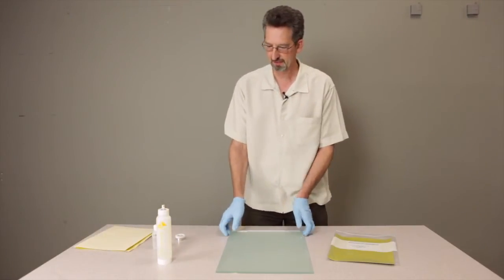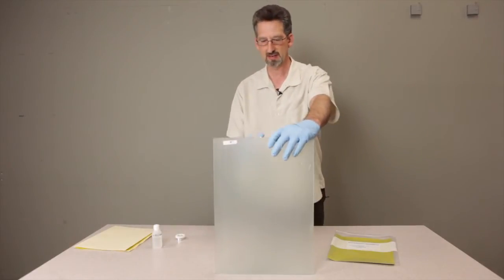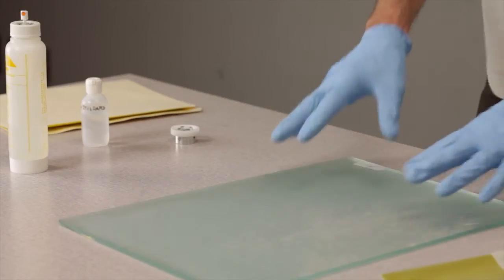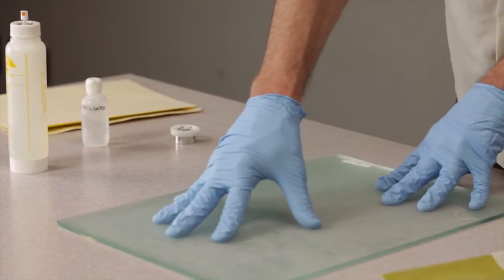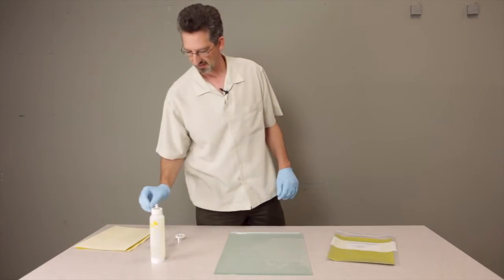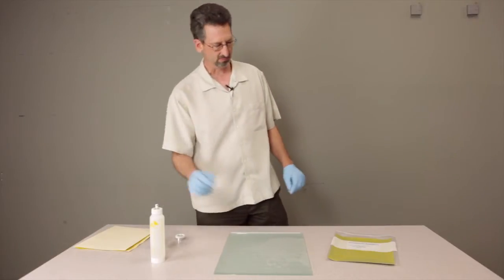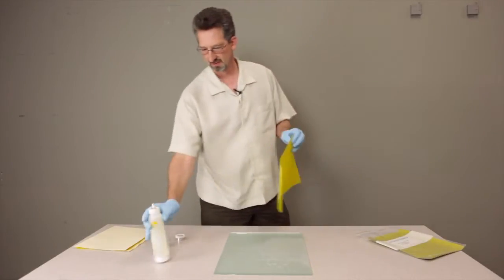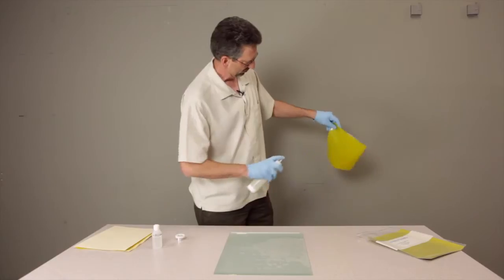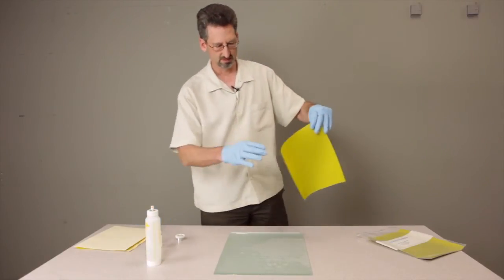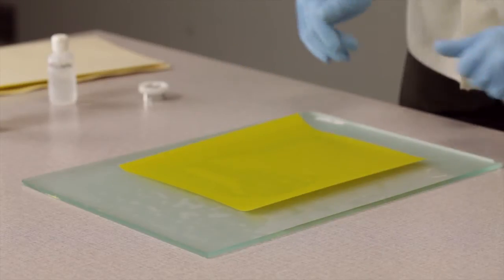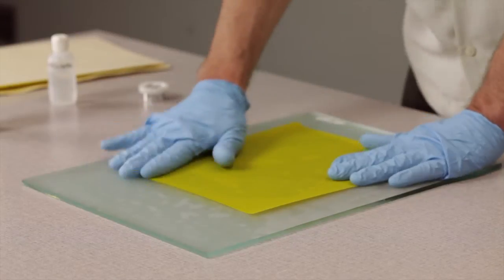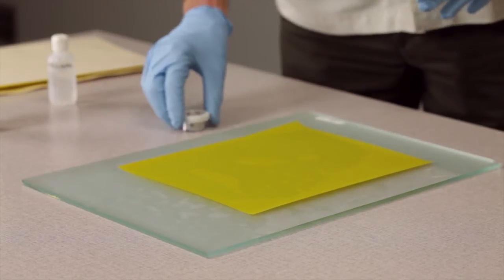So first step is we use a little bit of water on the backside of the glass and just spritz a little bit on there. And the plate will find a nice tight position there. We'll do the same thing on the back of the aluminum oxide sheet. Just a quick spray on the back. Since the water is only on the backside, it won't affect our samples, which often paints and varnishes are often water sensitive.